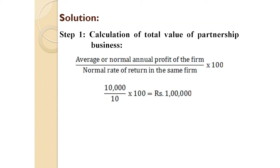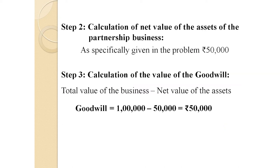Applying the three steps: Step one — Total value of business = ₹10,000 ÷ 10 × 100 = ₹1,00,000. Step two — Net value of assets is given as ₹50,000. Step three — Goodwill = ₹1,00,000 − ₹50,000 = ₹50,000.